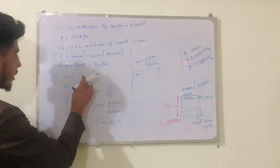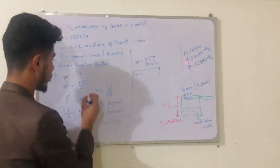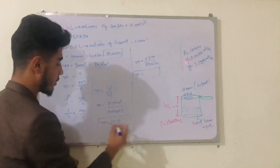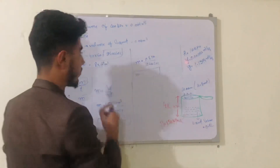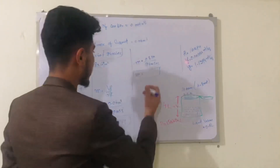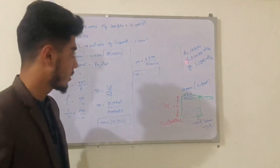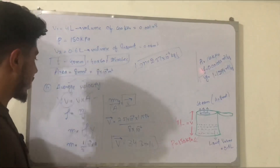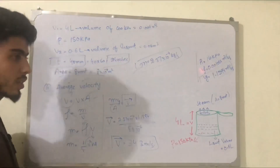So mass equals 0.570 kg. Putting this into the formula, mass flow rate equals 0.570 kilogram divided by 2400 seconds. The second step is to find the average velocity using the formula: volume flow rate equals velocity times area.